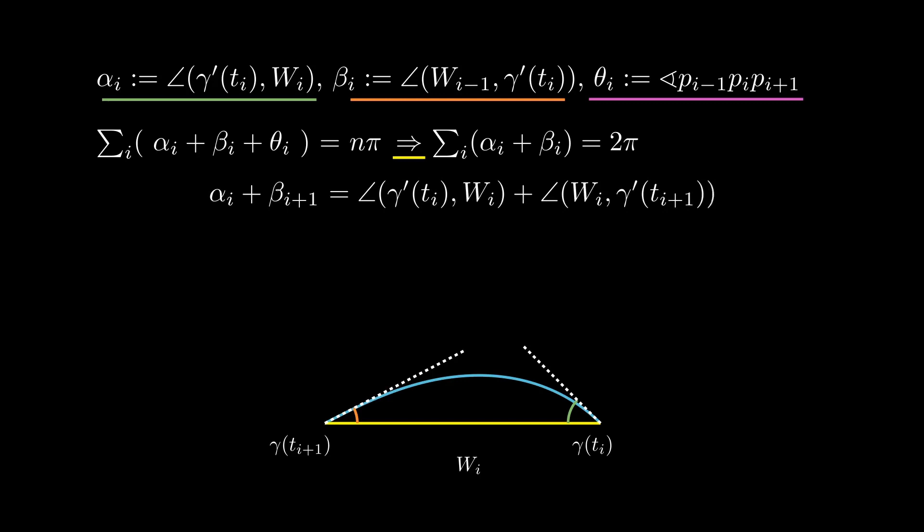Since signed angles are additive modulo 2π, this means that α_i + β_{i+1} is the change of angle for γ' from t_i to t_{i+1} plus a multiple of 2π, the last term being precisely the total curvature along that interval.